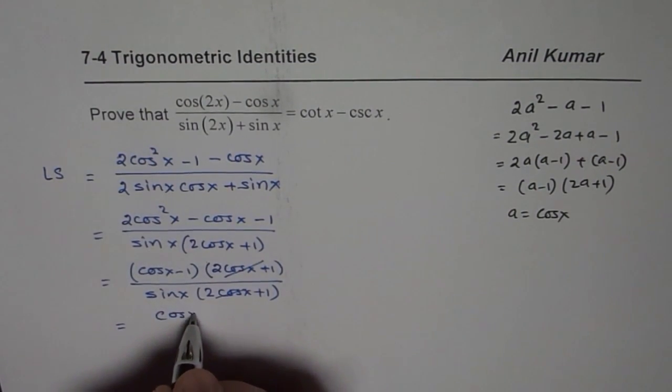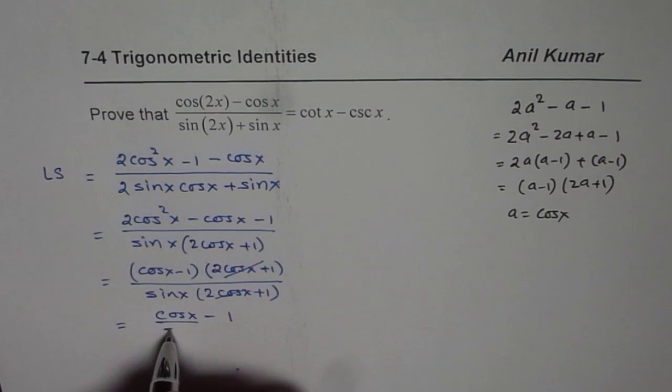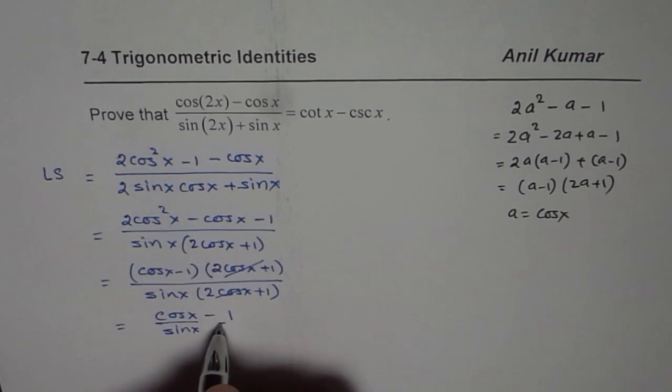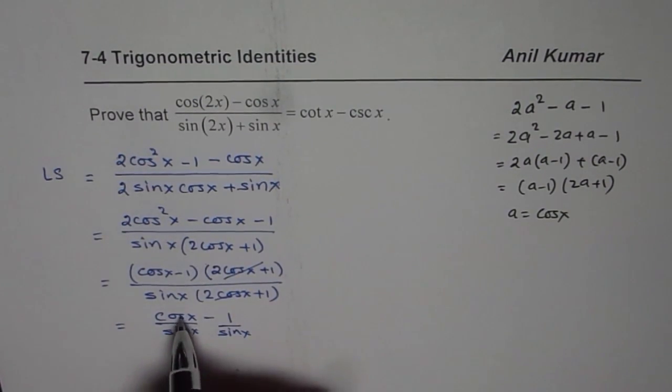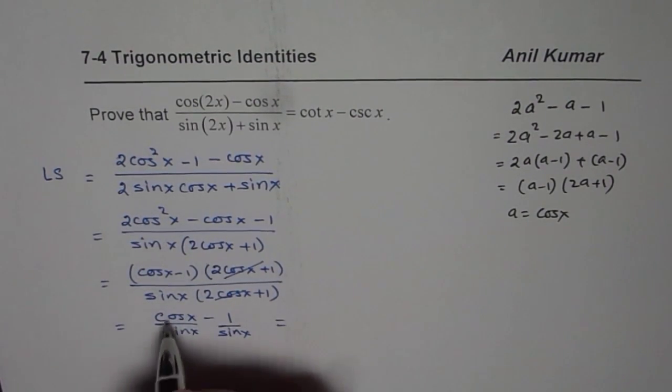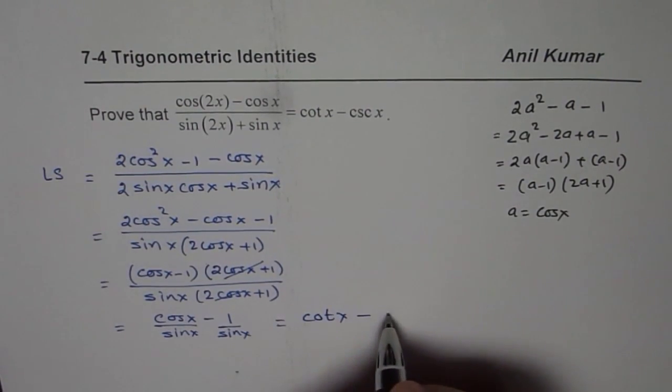So we have cos x minus 1. Both can be divided by sin x. Write like this: sine x divided by sine x. Sine x is a common factor. Now cos x over sin x is equal to cot x, and 1 over sin x is cosecant x.